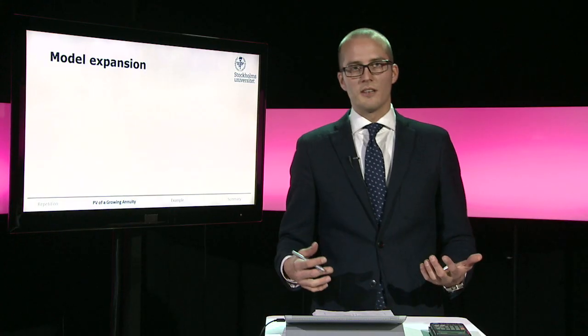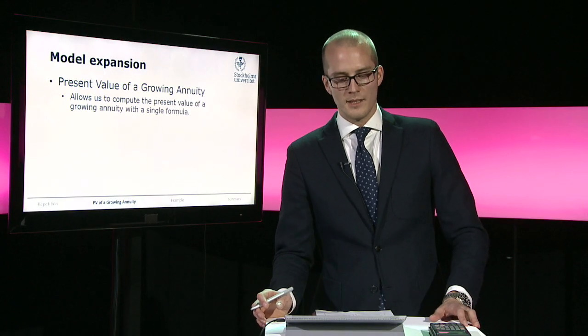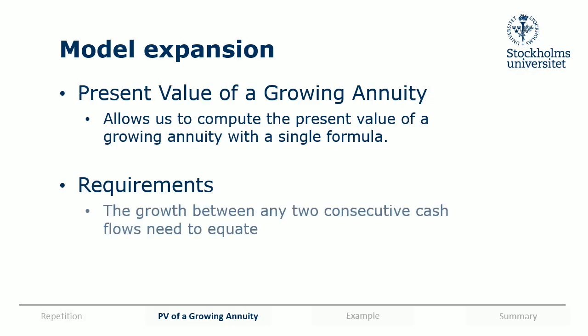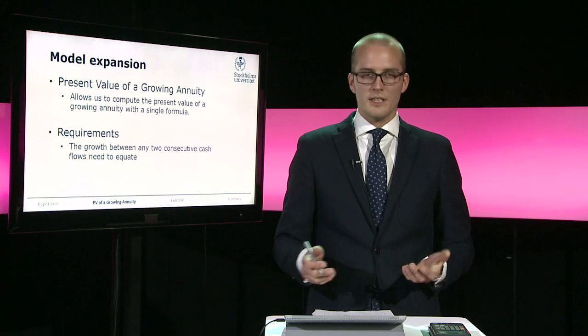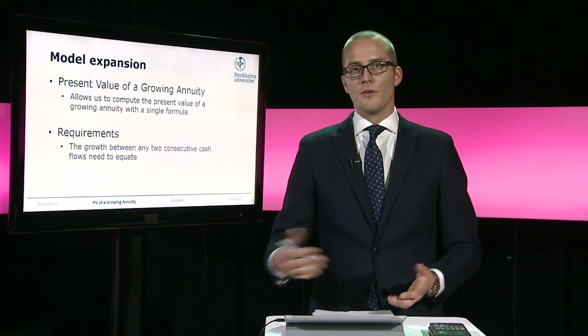Now we will expand our model and talk about the present value of a growing annuity, which allows us to compute the present value with a single formula. So what is a growing annuity? Instead of having equally big cash flows, we have equal growth between any two consecutive cash flows — the growth between the first and second cash flows must equal the growth between the third and fourth, and so on.